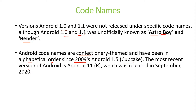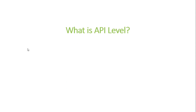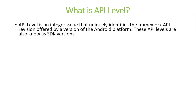The most recent version of Android is Android 11, also known as R, which was released in September of 2020. An API level is an integer value that uniquely identifies the framework API offered by a version of the Android platform. Since there are many different Android versions, this integer value is our API level, and API levels are also known as SDK versions.